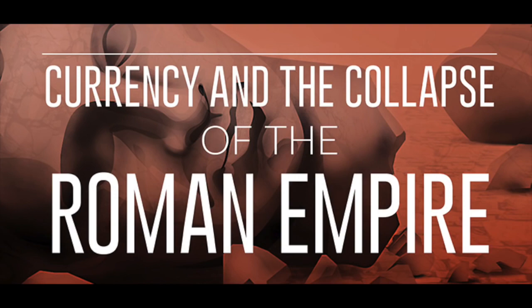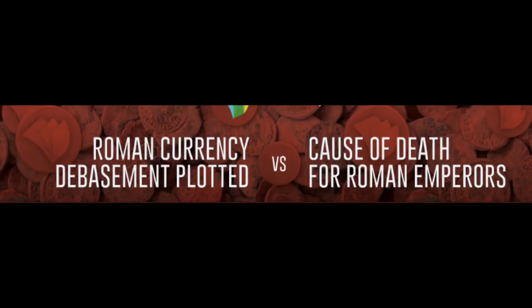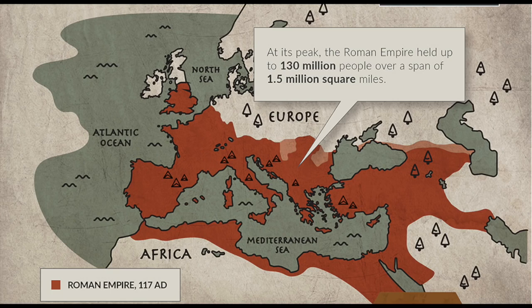One article is on Roman currency debasement, which ties right into currency and the collapse of Rome. The other talks about some of the emperors who were very influential in debasing their currency. We're going to walk through Roman history unscripted and talk about what we could learn from this, paying attention to the details and similarities — things that you could almost say we pattern directly off the way they managed their civilization and empire.